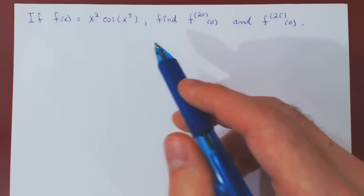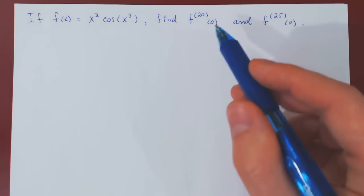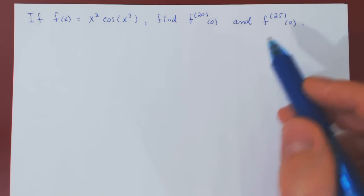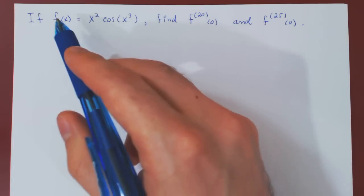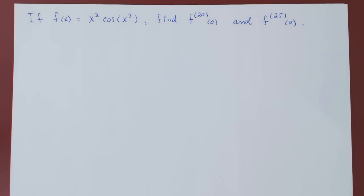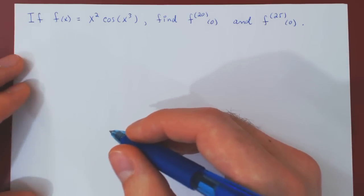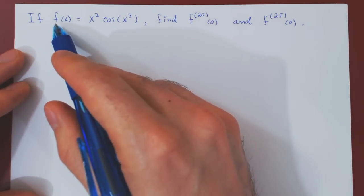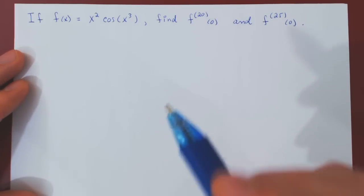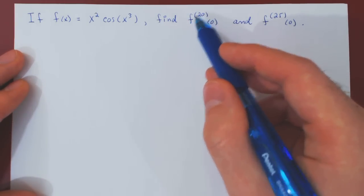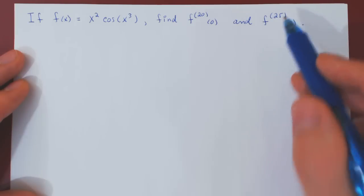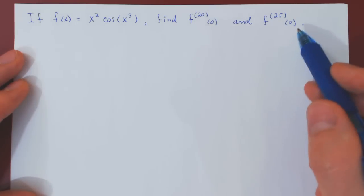For example, if we wanted higher derivatives of f at, say, 5, then we would find the Taylor series of f centered at 5, and the solution would be pretty much the same. So here, the function we choose is x squared times cos of x cubed, and we want to find the 20th derivative and the 25th derivative of this function at 0.